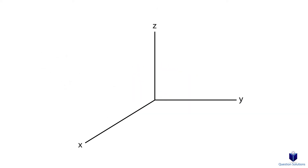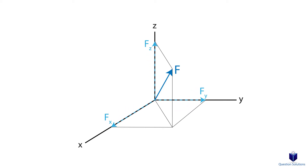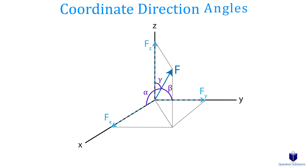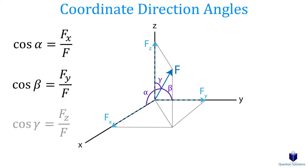Let's say we have a cartesian coordinate system with a vector drawn in it. We need a way to represent the angles created between each of the axes and the force vector. The X axis angle is represented by the alpha symbol, the Y axis angle by the beta symbol, and the Z axis angle by the gamma symbol. These are called the coordinate direction angles, and we can find them using specific equations.